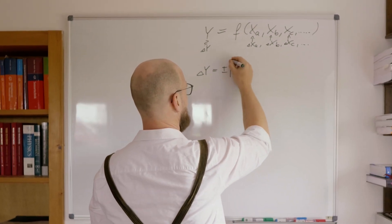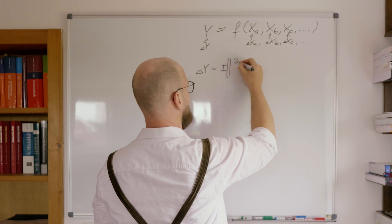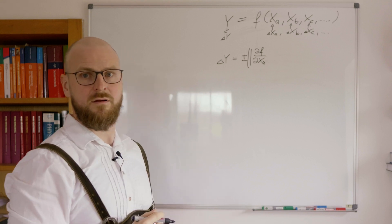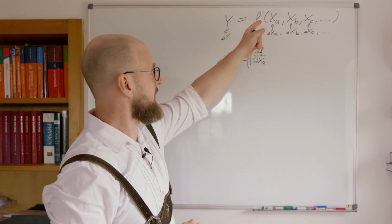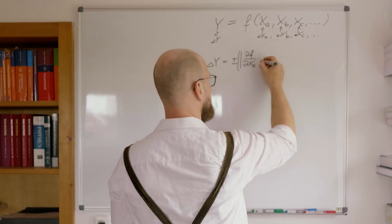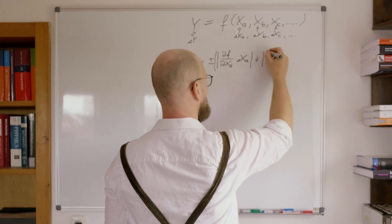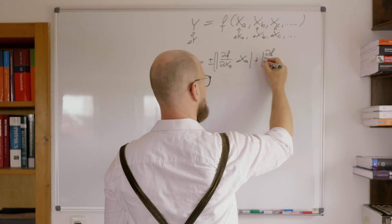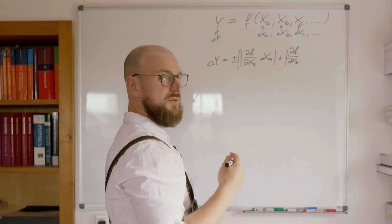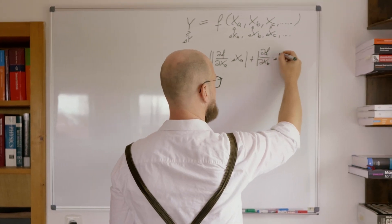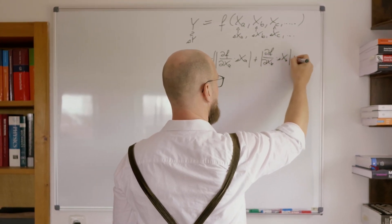definition. So, we define that error as the derivation of F to one of the measurement ingredients over here times its error plus the derivation, the next direction in respect to the next measurement ingredient, xb, over here times the error in xb, and so on.